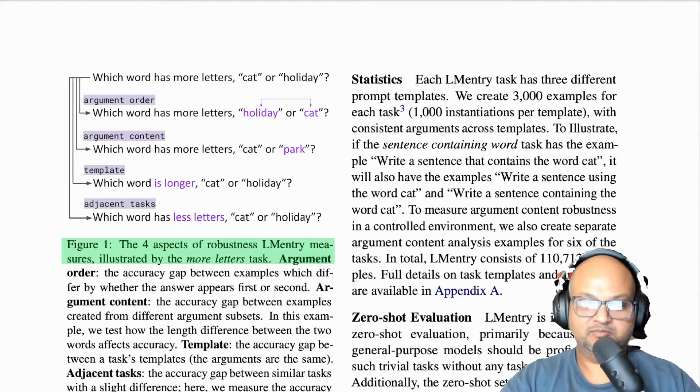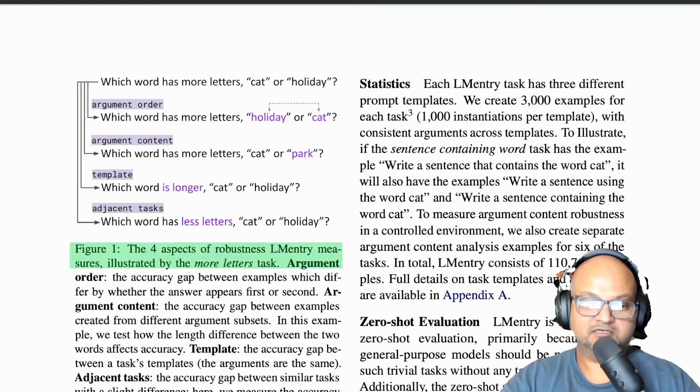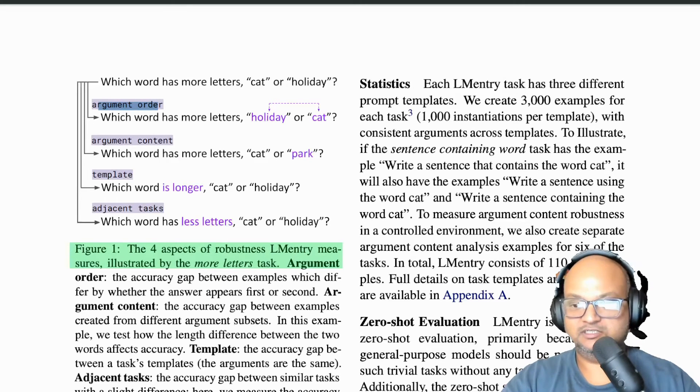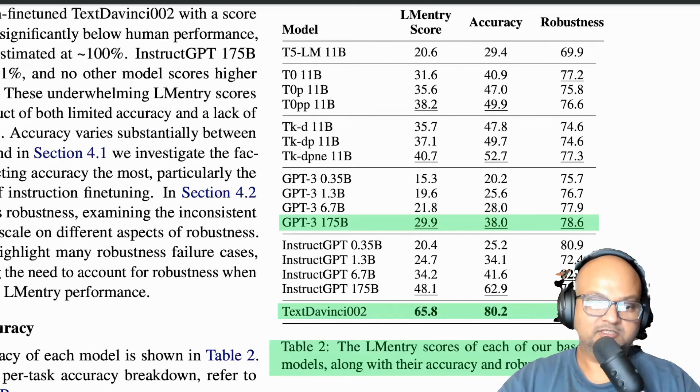On each of these tasks, they also tweak them a little bit and try to measure what they call robustness. For example, you could change the order of arguments like the order of words in the question, or you could keep the task the same but change the content in the question, you could change the words that the task is asking about.